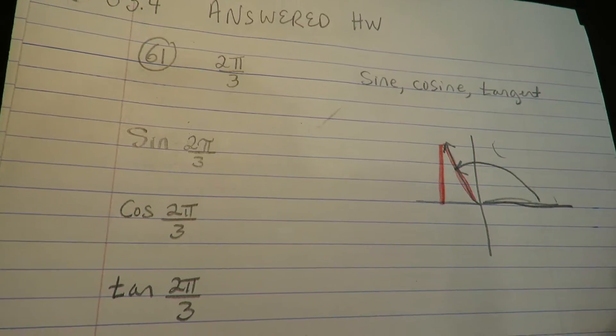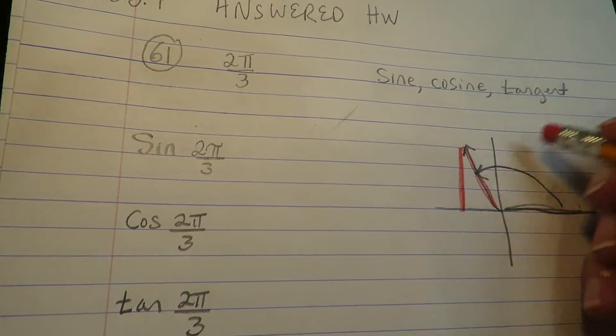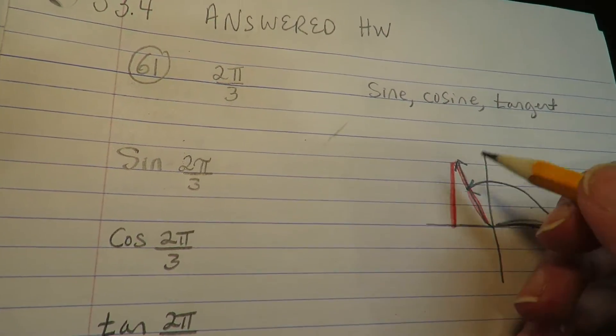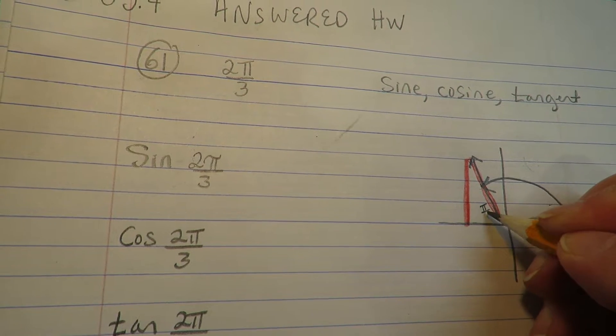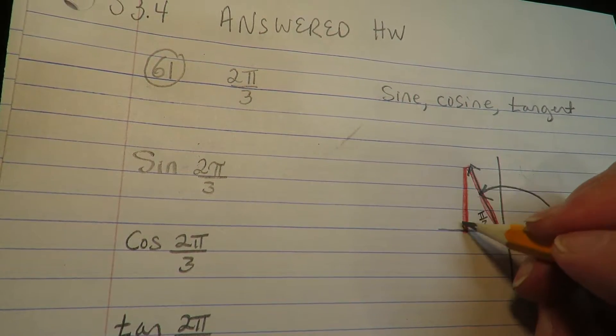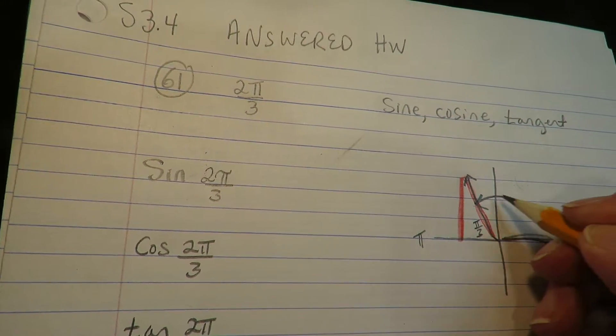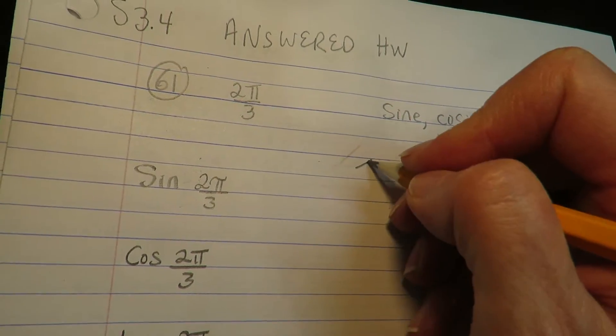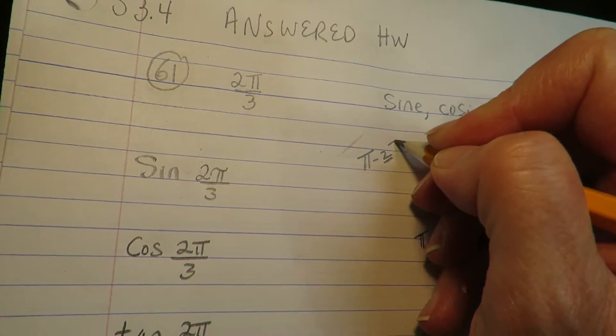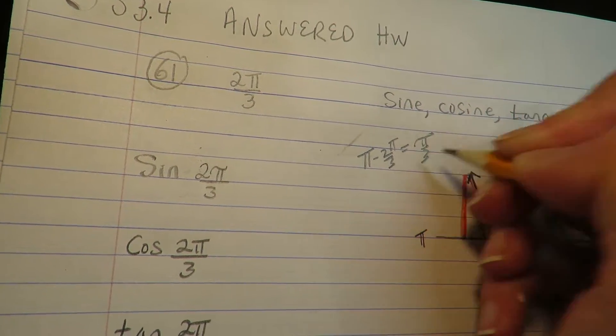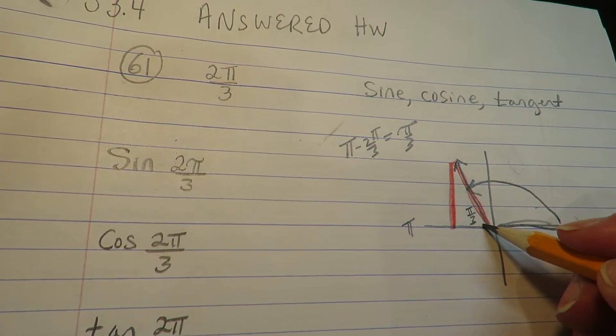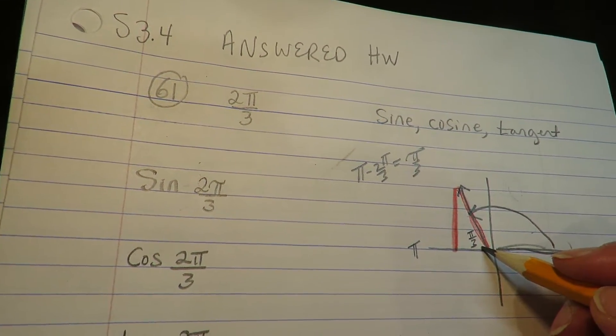Alright, so if this is 2π/3, if we've gone two-thirds of the way, then there is one-third of the way left. Right? Because to get to π, if you've gone 2π/3, then you have π/3 left to go. So that is the reference angle. That is your θ′.